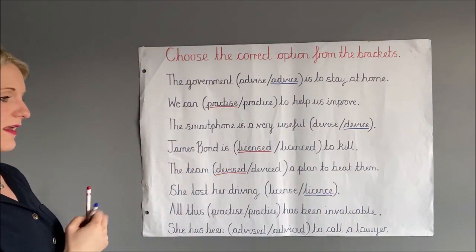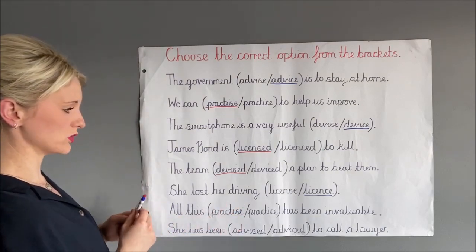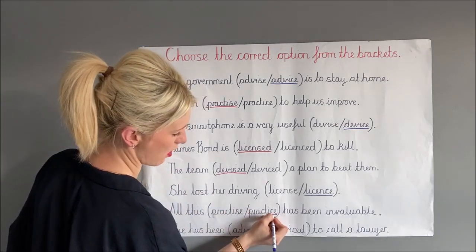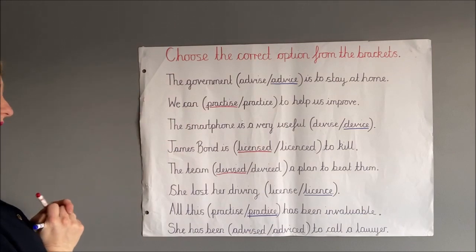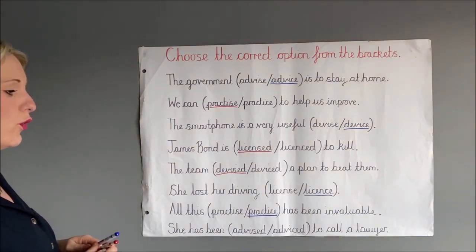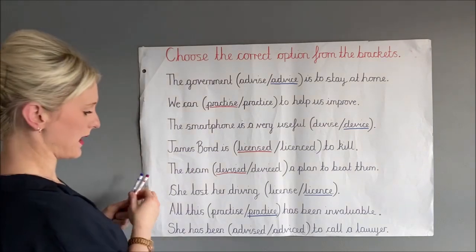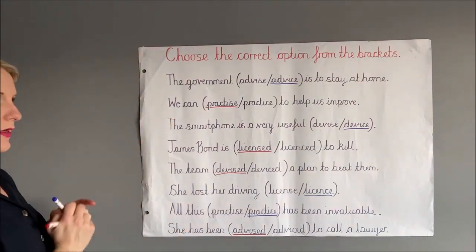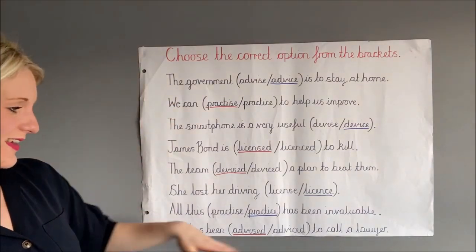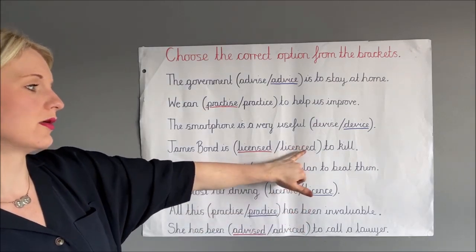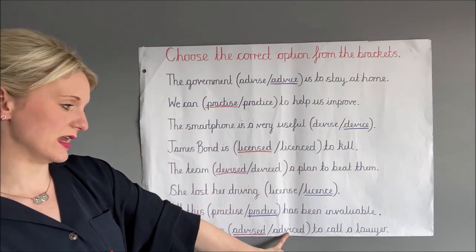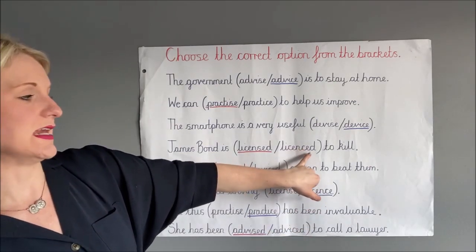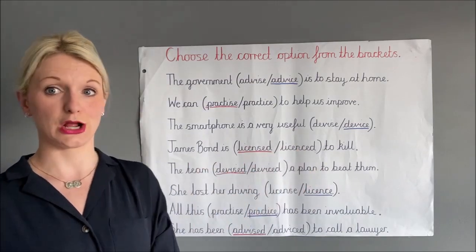'All this practice has been invaluable.' In this sentence, practice is being talked about as a thing — 'all this practice' — so that is going to be our CE ending. In the final sentence, 'she has been advised to call a doctor' — that would be an SED ending because it is something that is being done. You can remember that adviced and licenced don't exist at all, because you would never get a CED on advised or licensed, so that should have been a big clue on those ones.